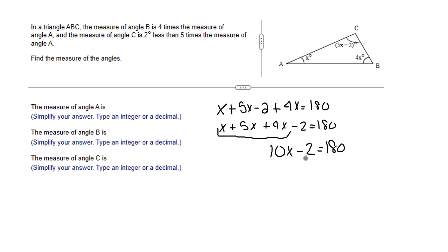I need to get 10X by itself, so the opposite of subtracting is adding. I'm going to add 2 to both sides of my equal sign. This gives us 10X equals 182. But I need X, so I have to divide by 10. That gives us X equals 18.2 degrees.